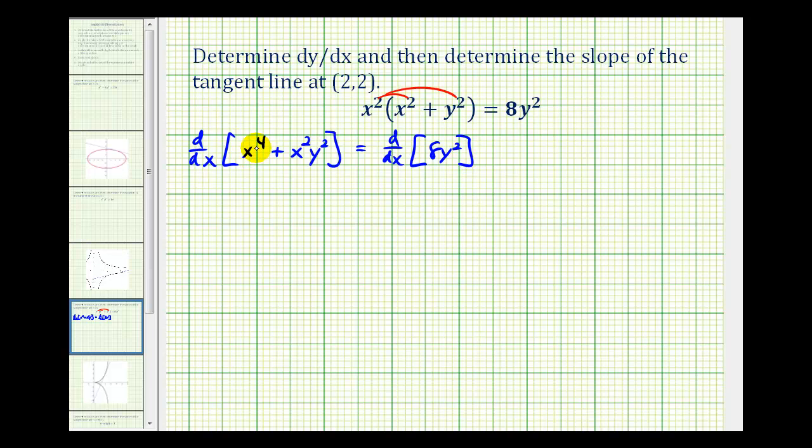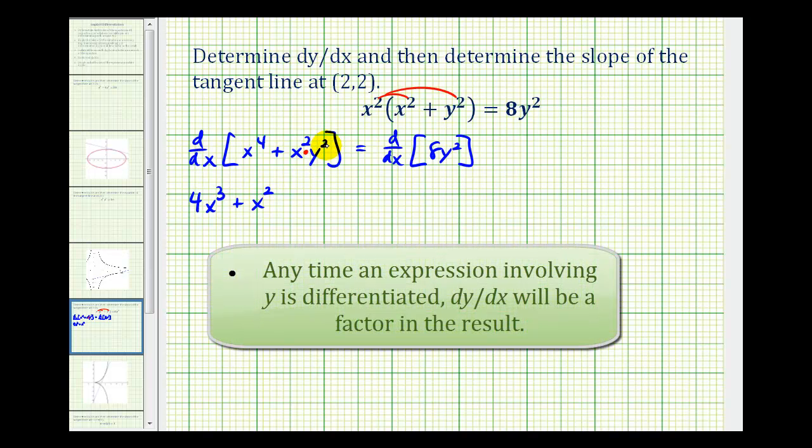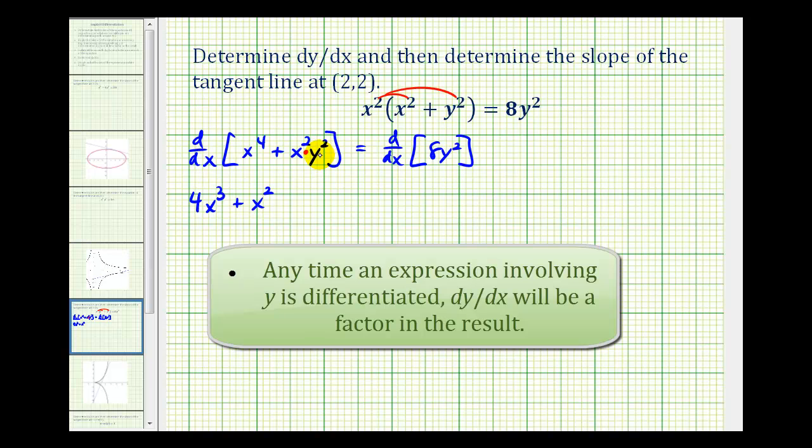The derivative of x to the fourth with respect to x would be 4x cubed. But now when we determine the derivative of x squared times y squared, we're going to have to apply the product rule. So we'll have the first function, which is x squared, times the derivative of y squared, and since this term involves y, we'll have to apply the chain rule.